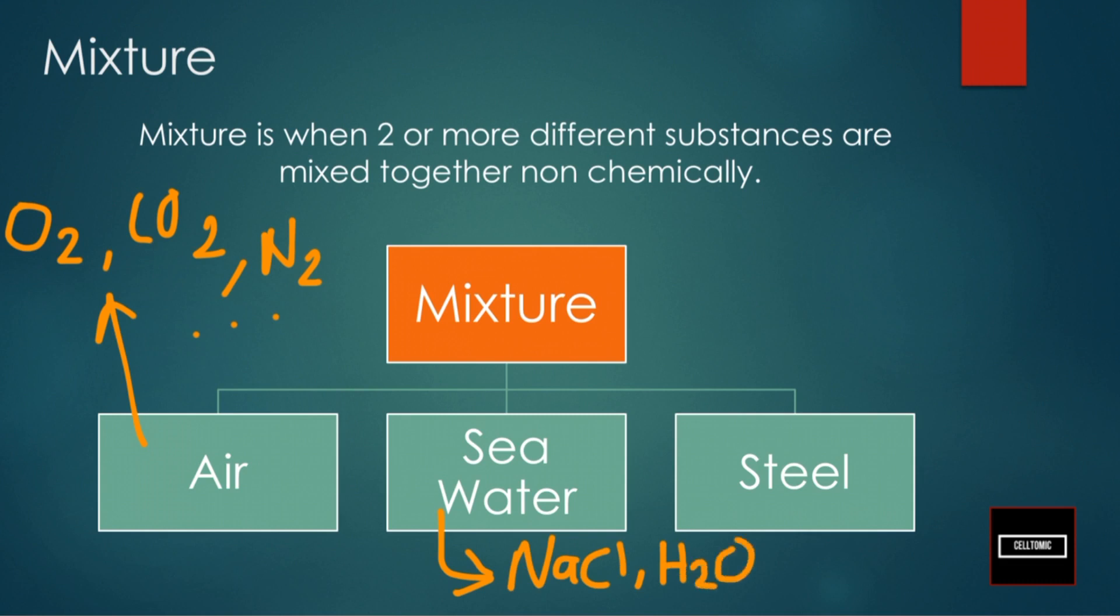And steel. Steel is also a mixture. It's actually a mixture of iron plus carbon. Carbon is added to iron to make steel stronger.